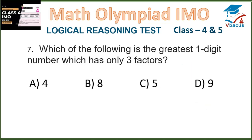Question 7. Which of the following is the greatest 1-digit number which has only 3 factors? We know 4 has 3 factors: 1, 2, 4. 8 has 4 factors: 1, 2, 4, 8. 5 is a prime number with only 2 factors. 9 has 3 factors: 1, 3, 9. So the greatest 1-digit number with only 3 factors is 9, which is in option D.